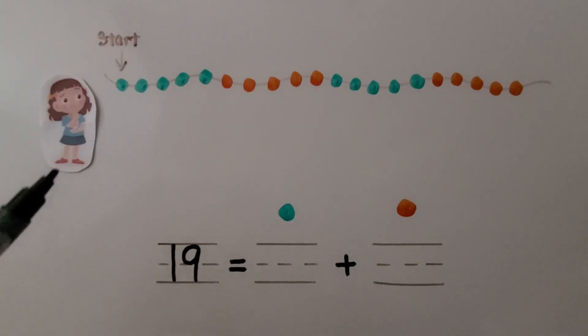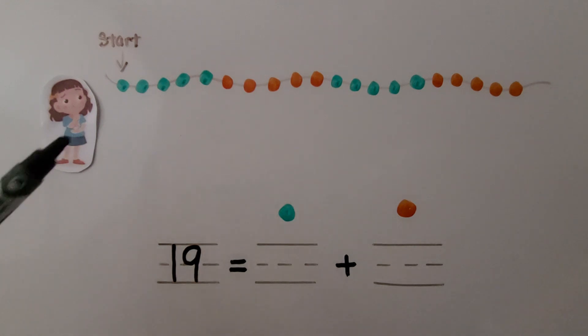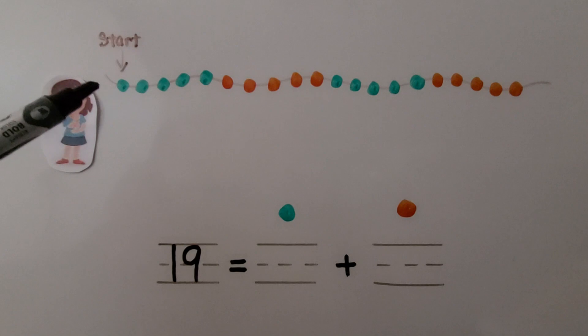Here's Emma. She made a necklace with 19 beads. They're green and orange beads. She starts with the green bead on the left. And we need to circle the beads that Emma uses to make her necklace.